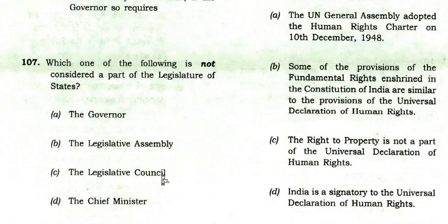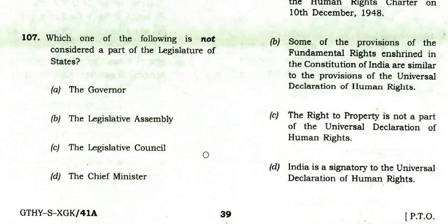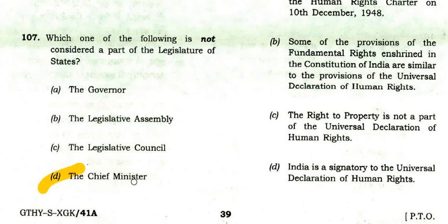Which is not considered a part of the legislature of a state? The Governor — he is a part. The Legislative Assembly — part of legislature. The Legislative Council — part of legislature. The Chief Minister — the Chief Minister as an independent body is not a part of the legislature, although as an MLA he is a member of the Legislative Assembly.